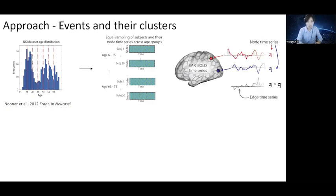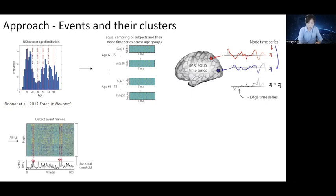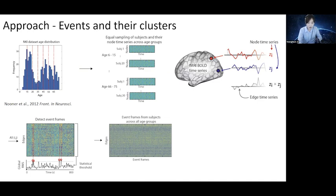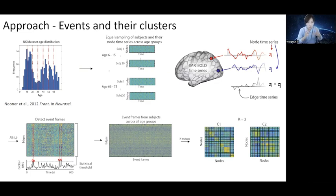There is an unequal distribution of samples across age groups. Thus, in all our analyses, we sampled an equal number of subjects, 20 subjects per age group across seven age bins. Each age bin had a size of 10 years. For each subject, we created edge time series by the frame-wise multiplication of nodal time series and detected the events. Next, the event frames were collected from all subjects across all age groups, upon which we performed k-means clustering.